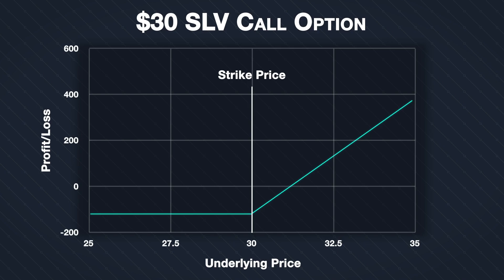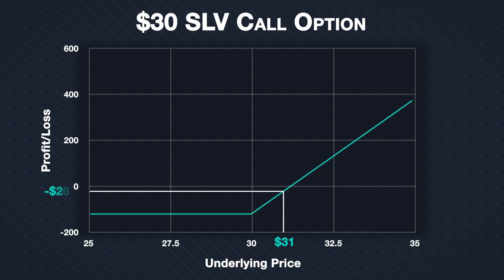In example three from the previous lecture, we bought an SLV call option with a strike price of thirty dollars, and it expired with the price of SLV at thirty one dollars — above our strike price. This means the option had an intrinsic value of one dollar when it expired. However, because we paid a one dollar twenty six premium, we lost twenty six cents per share on the trade overall. It is useful when buying call options, particularly if planning to hold them to expiry, to know what price the underlying needs to reach for the trade to break even.